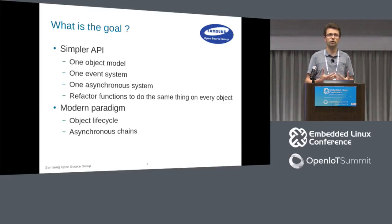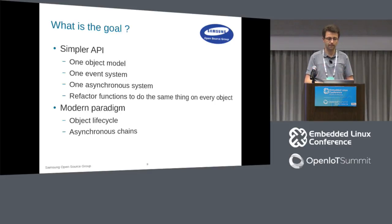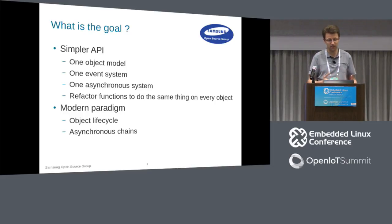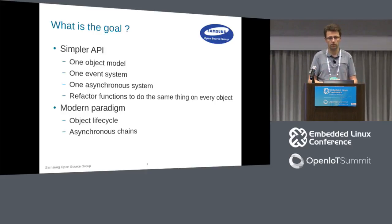From there, it also pushes us to have a simpler API with the same functions across all parts of the libraries. We want the same object model, the same event system, and the same asynchronous system — and to refactor all of that. Being in 2018, we want to be more modern: proper lifecycle support that matches every binding, so that in C++ you'll have RAII and only references, no pointers.